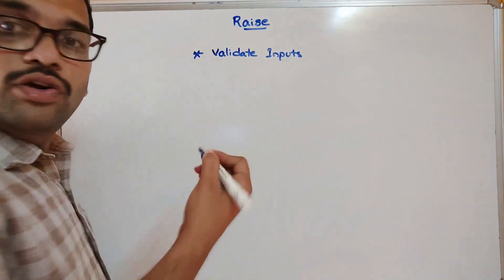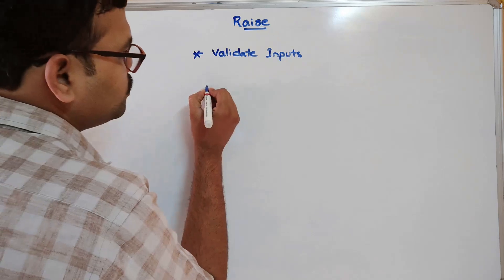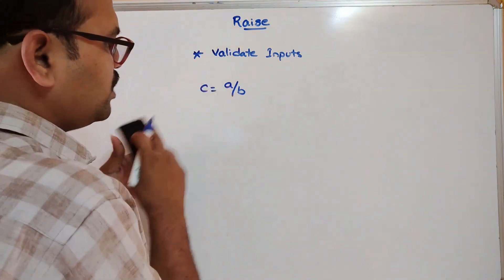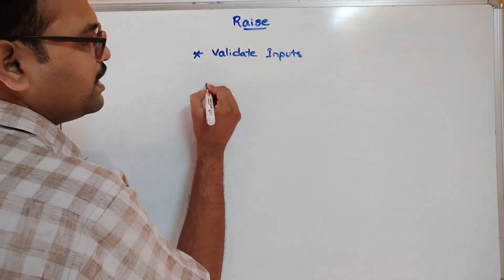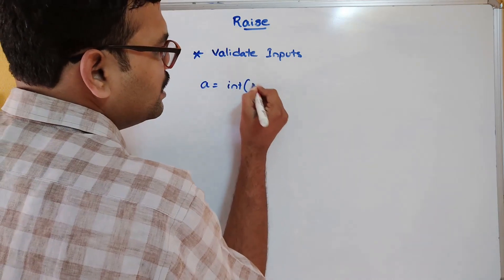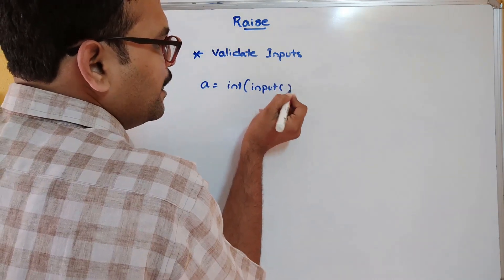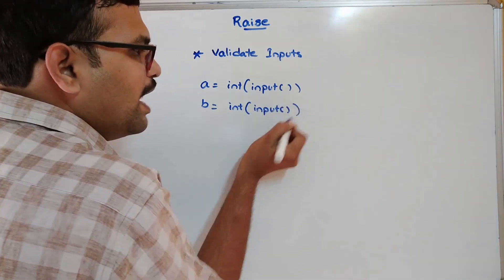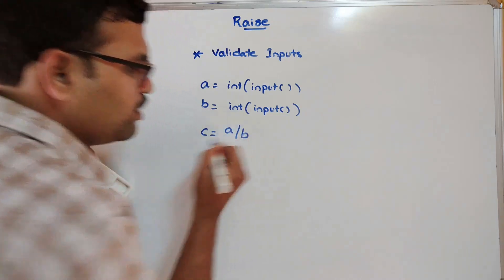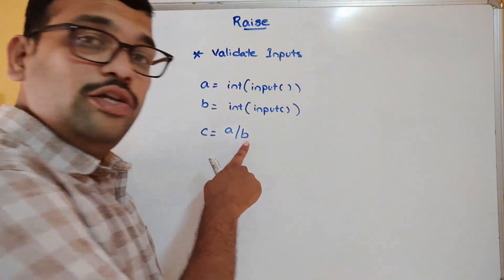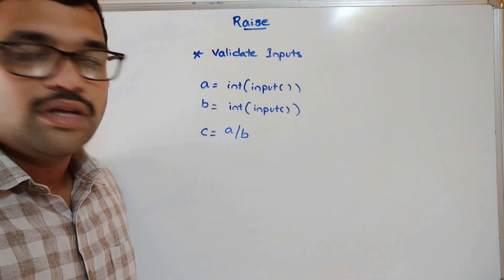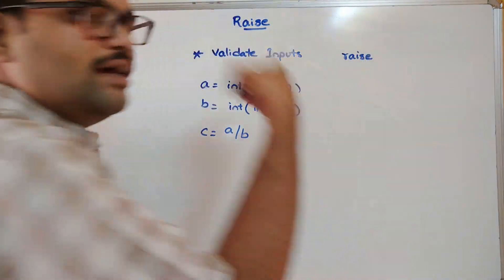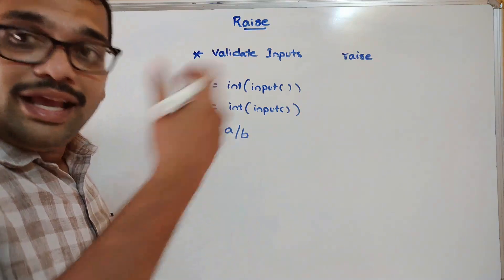For example, let us take the ZeroDivisionError which we saw in the previous session. We have c = a / b, where we take two inputs: a = int(input()) and b = int(input()). When we directly execute a / b, whenever b is zero it will automatically raise the exception. But now we can use the keyword `raise` to raise the exception based on a condition.